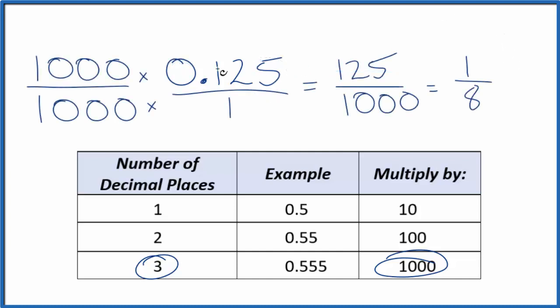So to recap, we divide by 1 to start our fraction. Then we look at the decimal places. In this case we have 1, 2, 3, so we multiply by 1,000. We end up with our fraction which we simplify. This is Dr. B converting decimals to fractions.